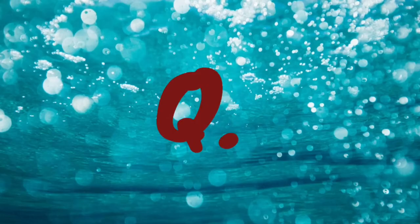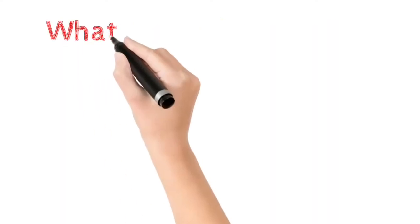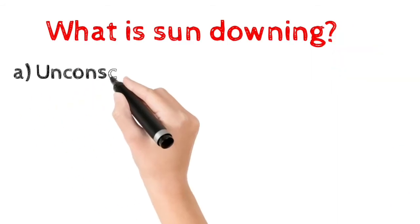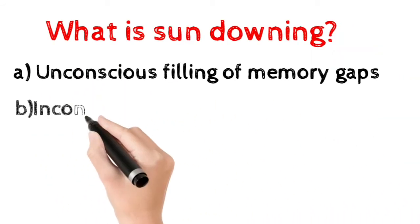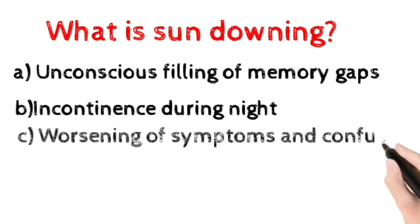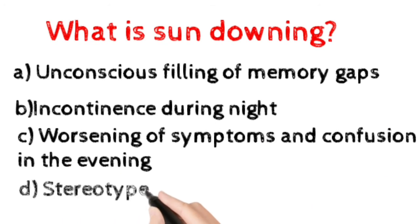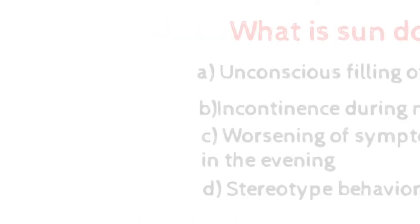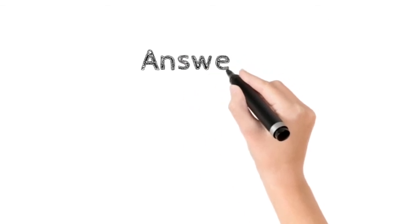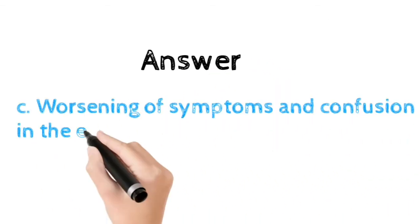Number nine: What is sundowning? Option A: unconscious feeling of memory gaps. Option B: incontinence during night. Option C: worsening of symptoms and confusion in the evening. Option D: stereotype behavior. Here the correct answer is option C, worsening of symptoms and confusion in the evening.